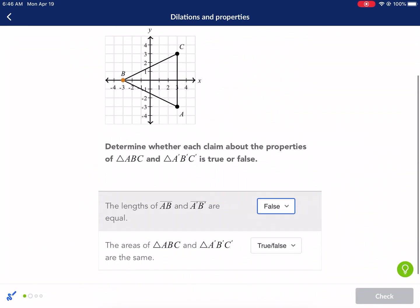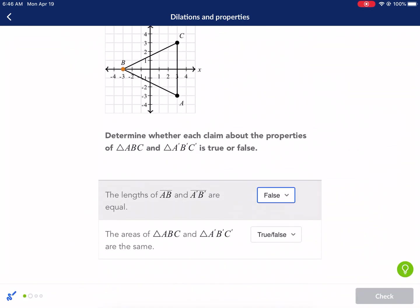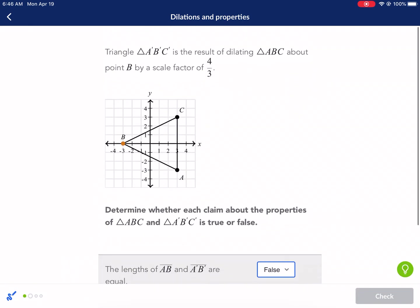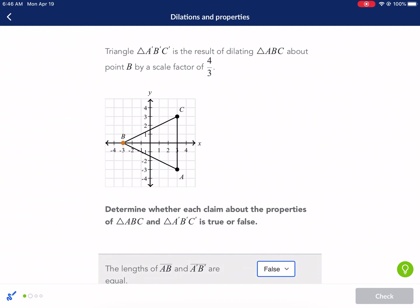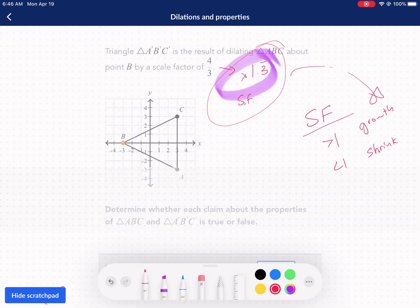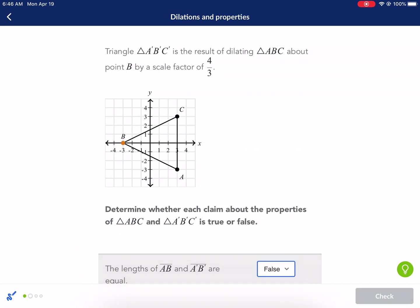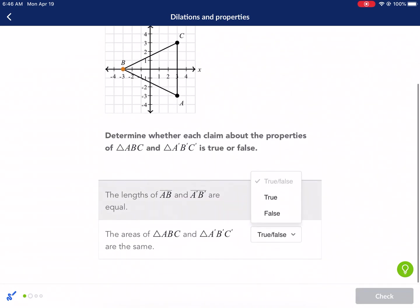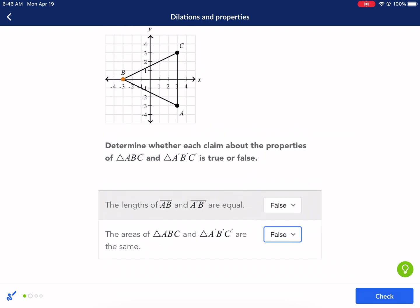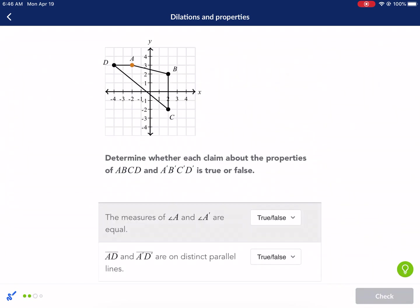Let's go back to here. The areas of ABC and ABC prime are the same. Definitely not. If it's going to expand, then the area is definitely going to change, because that's the definition of area, it's the length of the base times the length of the height times one half, but either way, it's not going to be the same area.